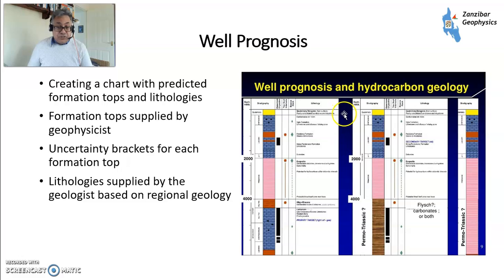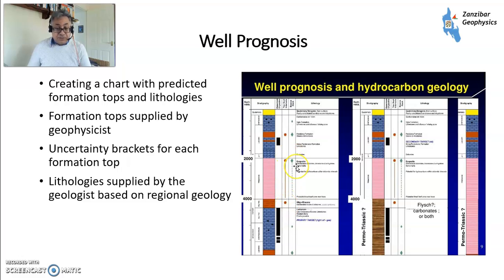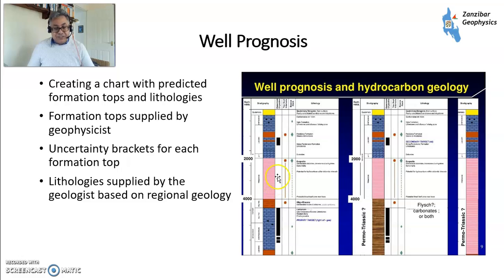Well prognosis is something a geologist prepares before the well — what we thought was going to happen versus what happens after. A geophysicist supplies formation tops, estimating where formations are likely to come in, with uncertainty brackets — for example, 50 metres up or 100 metres down. You have lithologies from regional geology to figure out what is ahead of the drill bit so the drillers can anticipate what happens. Sometimes you get it wrong, which can be a bit embarrassing, but you need to capture as much uncertainty as possible.